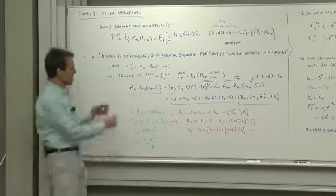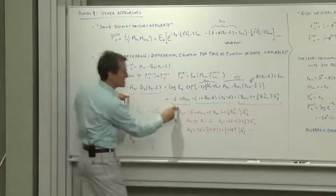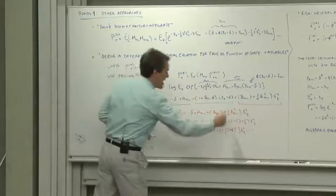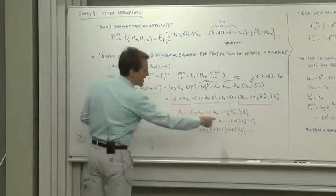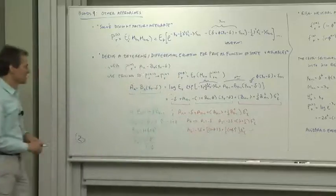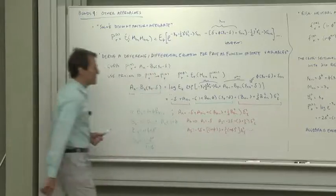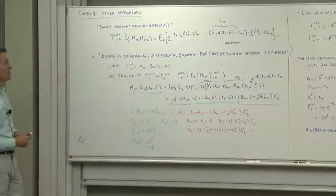The a's work the same way. The constant terms, I've got an equals that plus that. Once I'm given the bns, then I have a difference equation for the ans, which you can work out in the same way. It takes a little more time to do it, but you can see all these risk premium terms appearing in the an formulas.